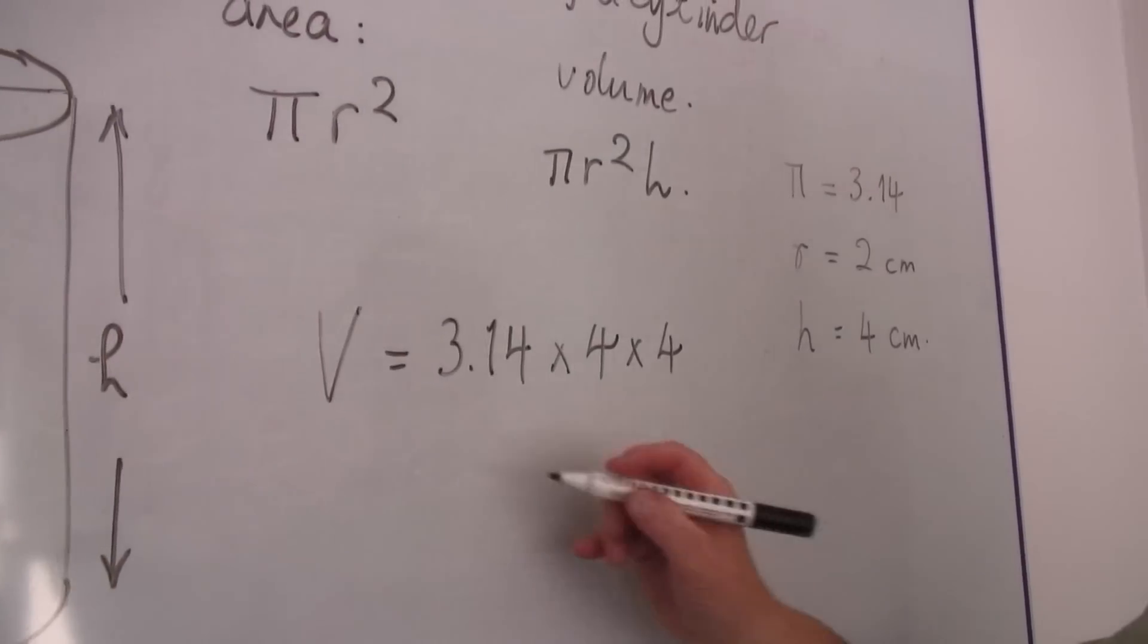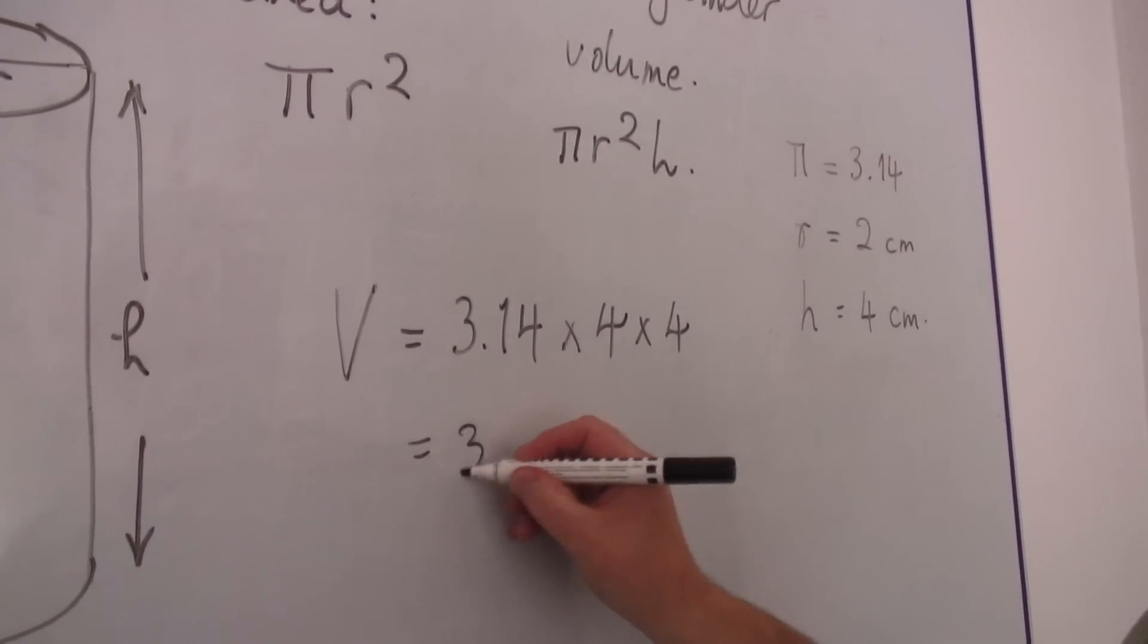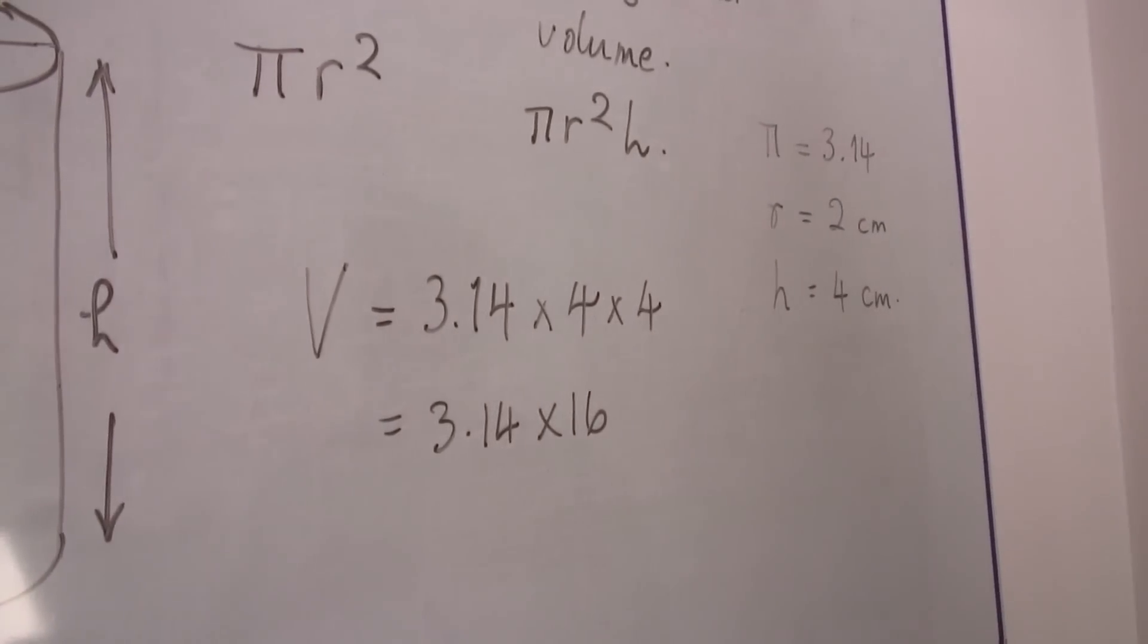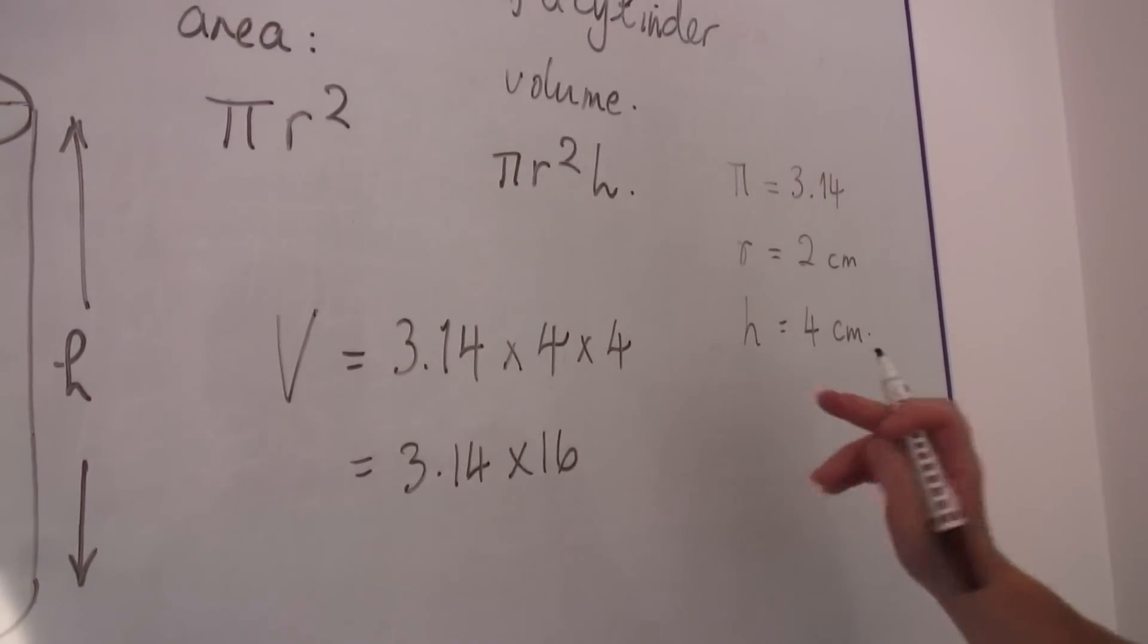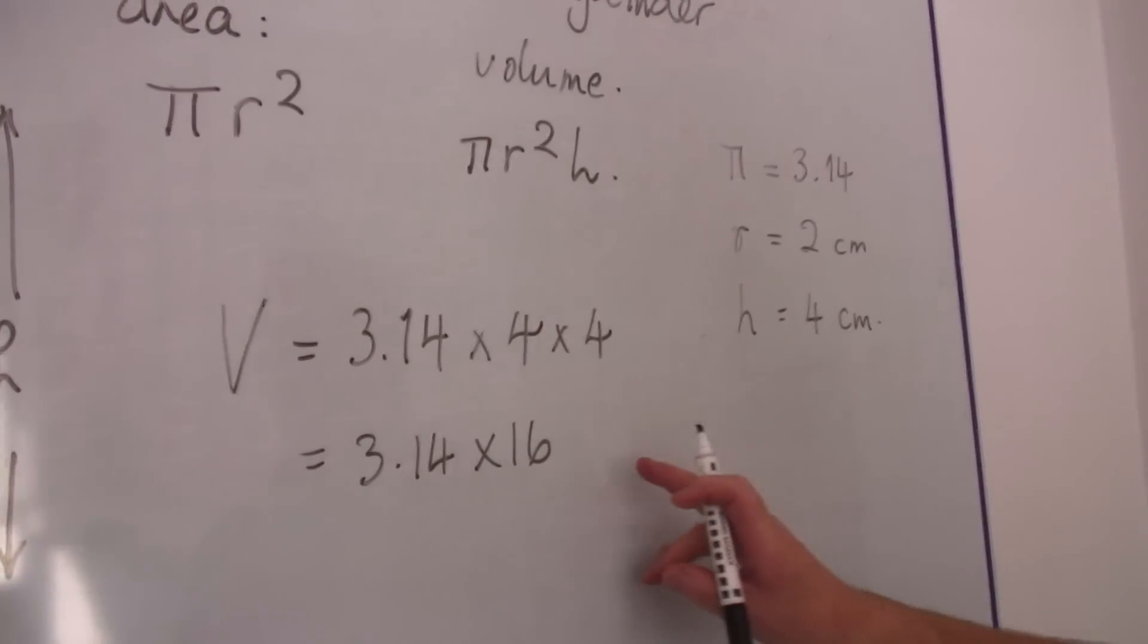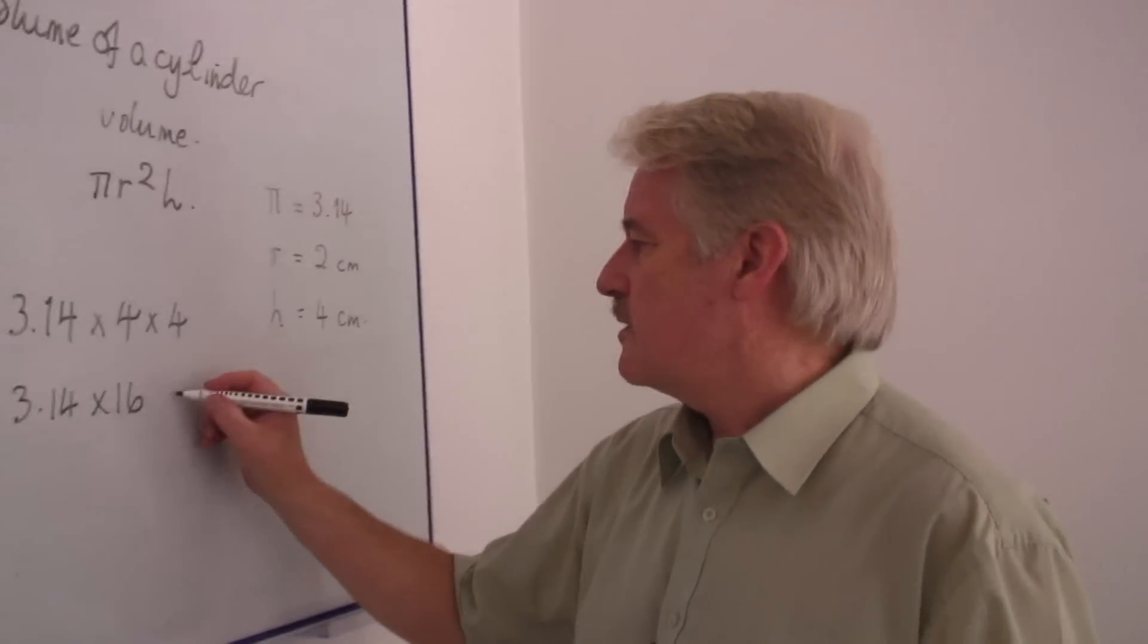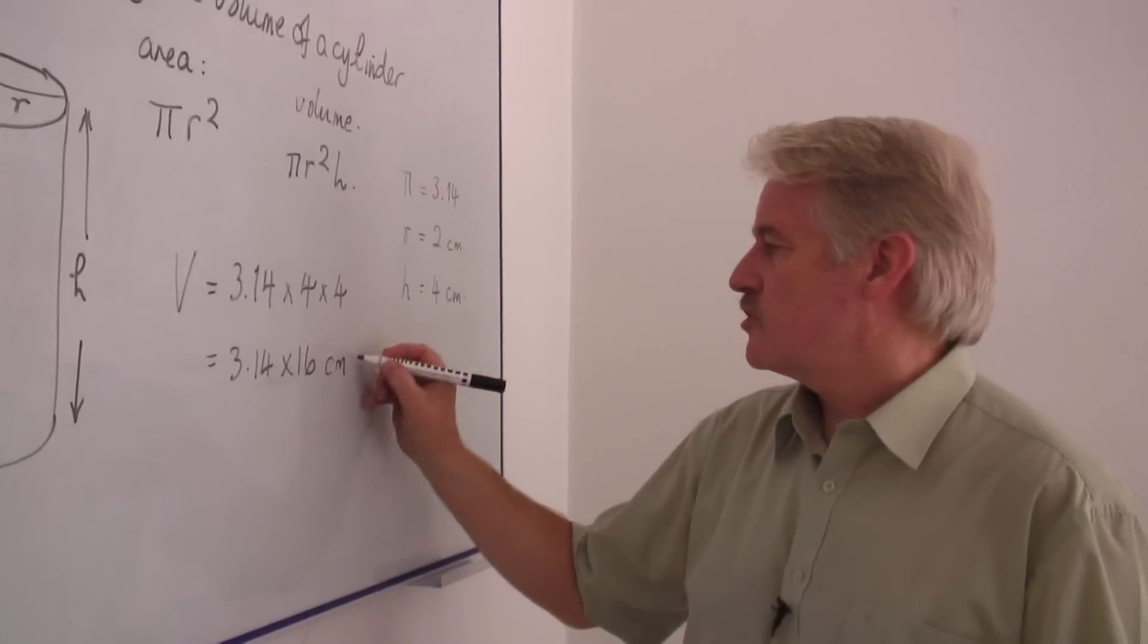So the volume is 3.14 times 16 which you can work out for yourselves. But remember the answer, this is a volume, must be if we're working in centimetres, centimetres cubed.